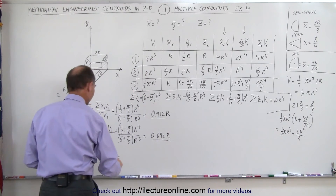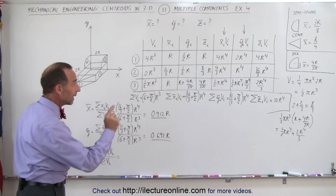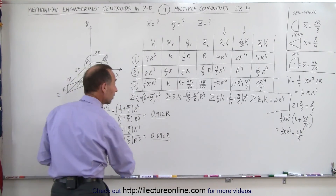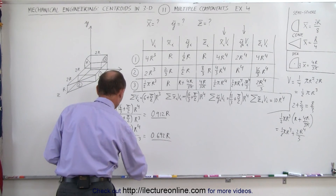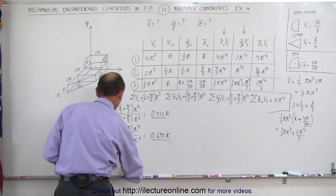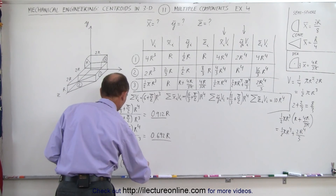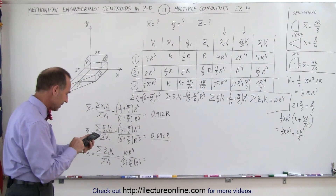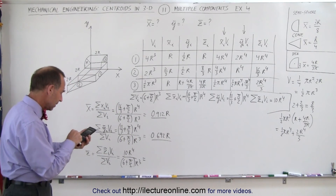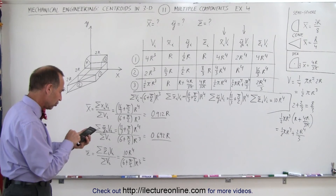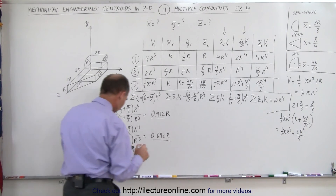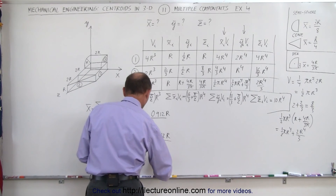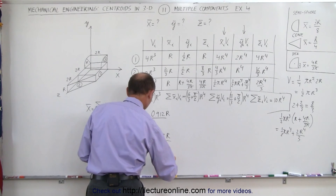And finally, for the z-direction: we take 10r⁴ divided by (6 + π/2)r³. Using the calculator: 10 ÷ (π/2 + 6) = 1.321, so z̄ = 1.321r.